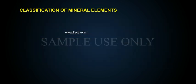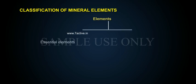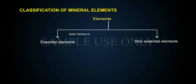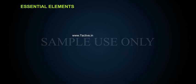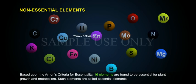Elements are divided into essential elements and non-essential elements. Essential elements are again divided into macronutrients and micronutrients. Based upon Arnon's Criteria for Essentiality, 16 elements are found to be essential for plant growth and metabolism. Such elements are called Essential Elements.